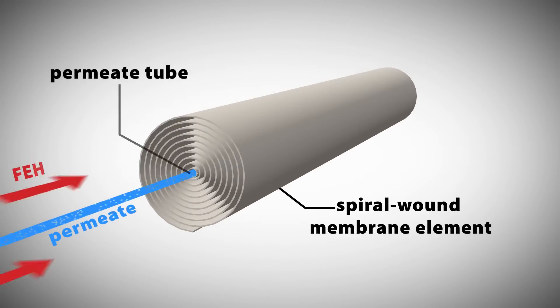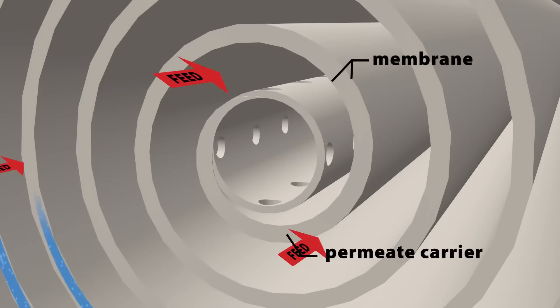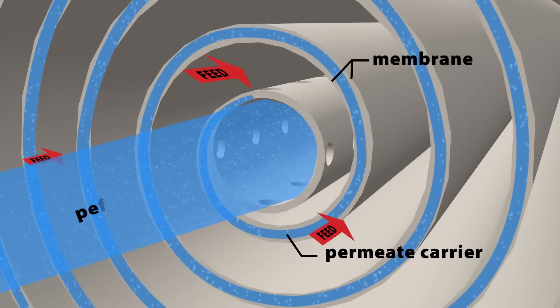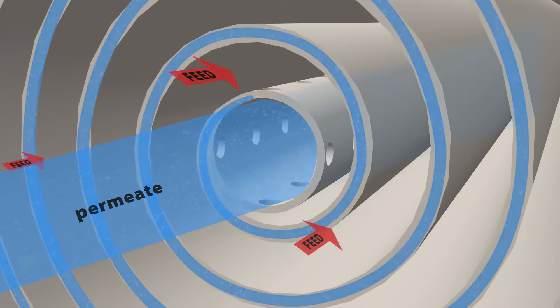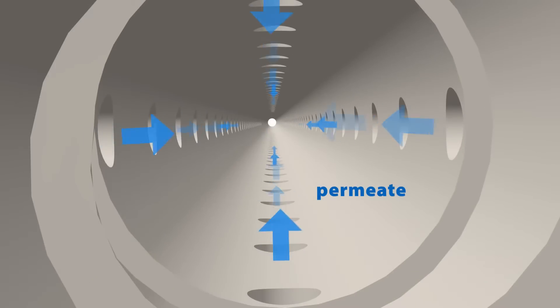The goal of this initial study is to determine the separation performance of our membranes using our customers' intended feed stream. This process is also used to determine important parameters such as whether or not the feed solution has any fouling tendencies.